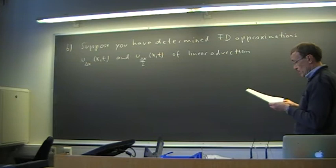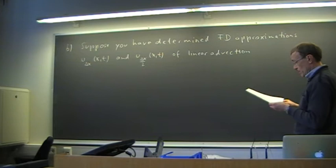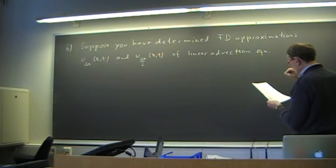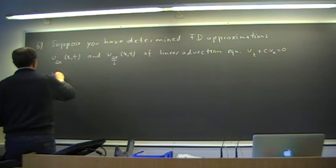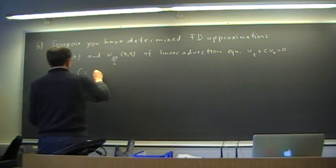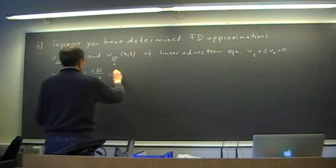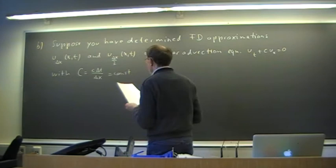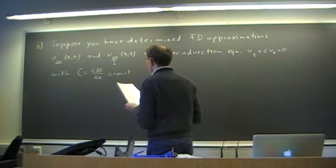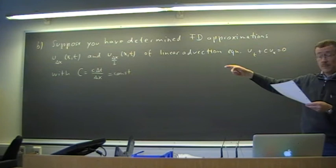We could also imagine doing it for Burgers' equation if we like. But here we just take the linear advection equation, u_t plus c u_x equals 0, where we have chosen a certain Courant number. The Courant number is the advection velocity c times delta t divided by delta x, and that is chosen to be constant in this process. So when we do a grid refinement, we also do the time step refinement accordingly.